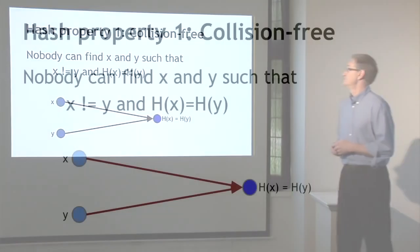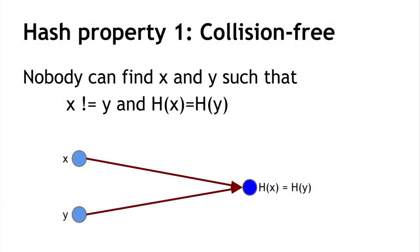The first property we need from a cryptographic hash function is that it's collision-free. What that means is that it's infeasible — nobody can find values x and y such that x and y are different, and yet the hash of x equals the hash of y. If we look at the operation of the function, here's x and h(x), and here's y and h(y); nobody can find a situation where x and y are separate and yet hash to the same value. Now, I said nobody can find — I didn't say there is no collision.